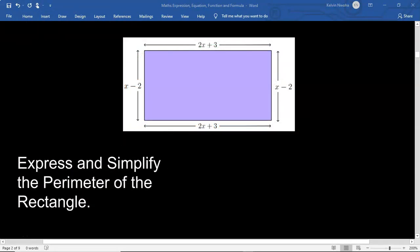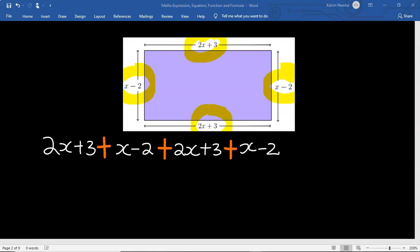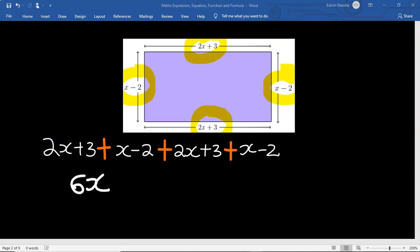Let's express and simplify for the perimeter of this rectangle by adding all the sides. The addition of all the sides will give you the perimeter. Next, 2x plus x plus 2x plus x. This will give us 6x. Next, 3 minus 2 plus 3 minus 2. This will give us plus 2.